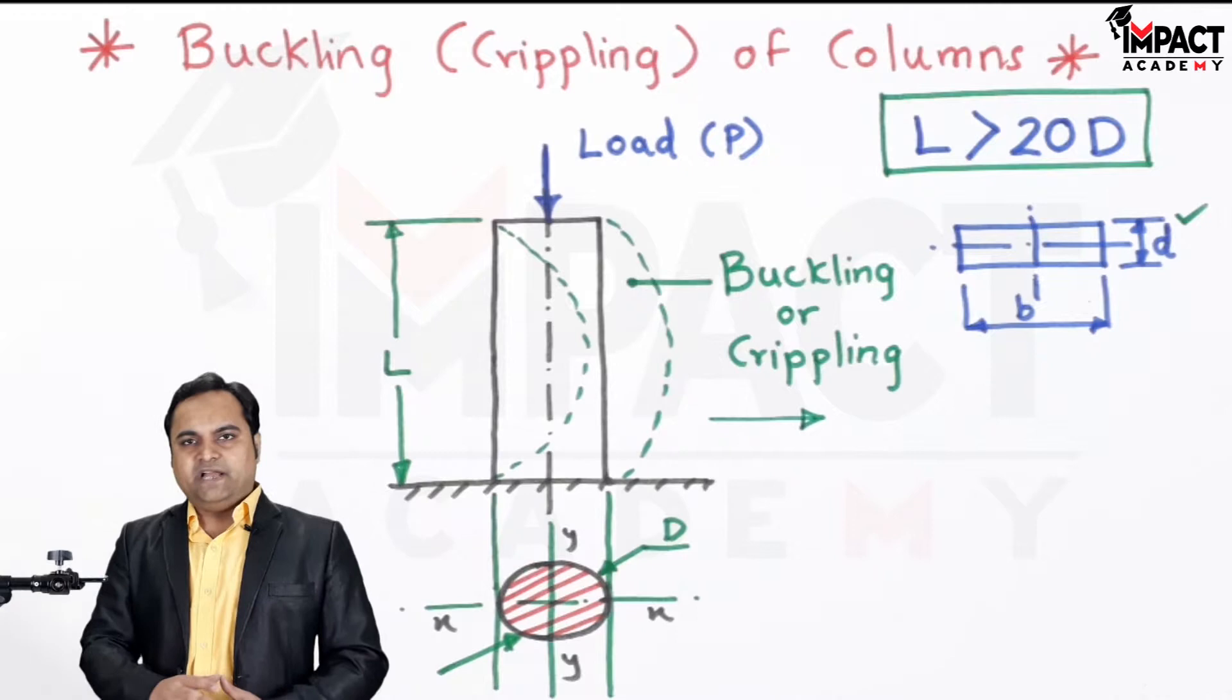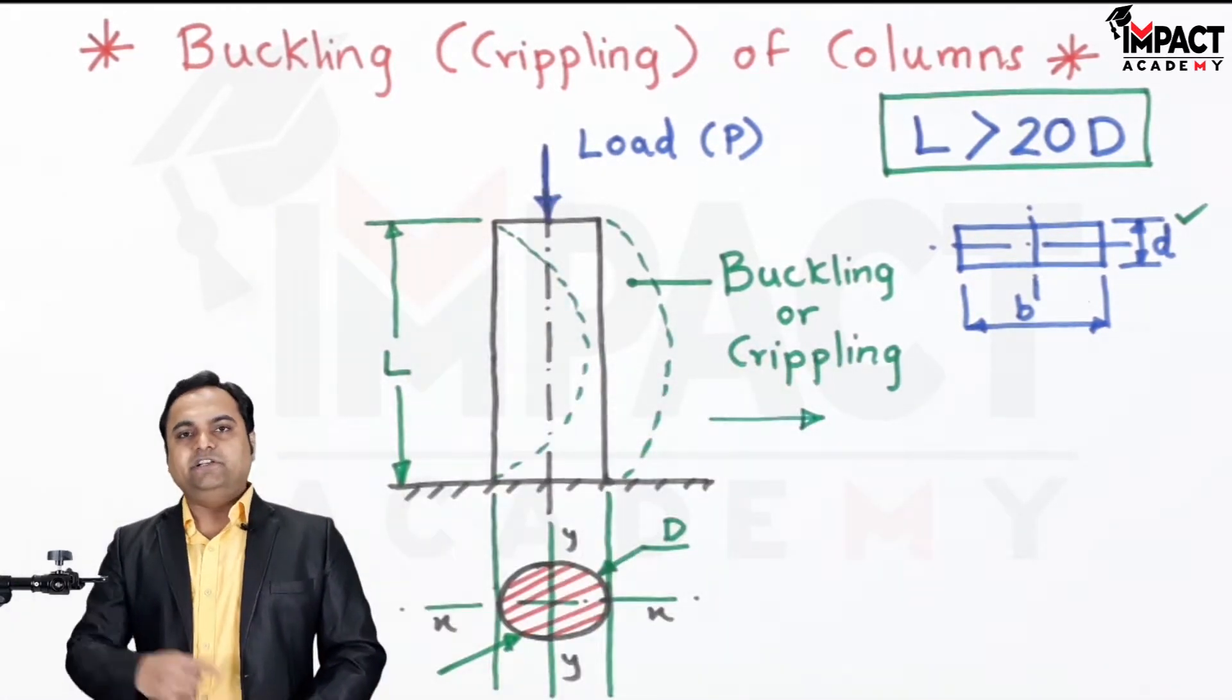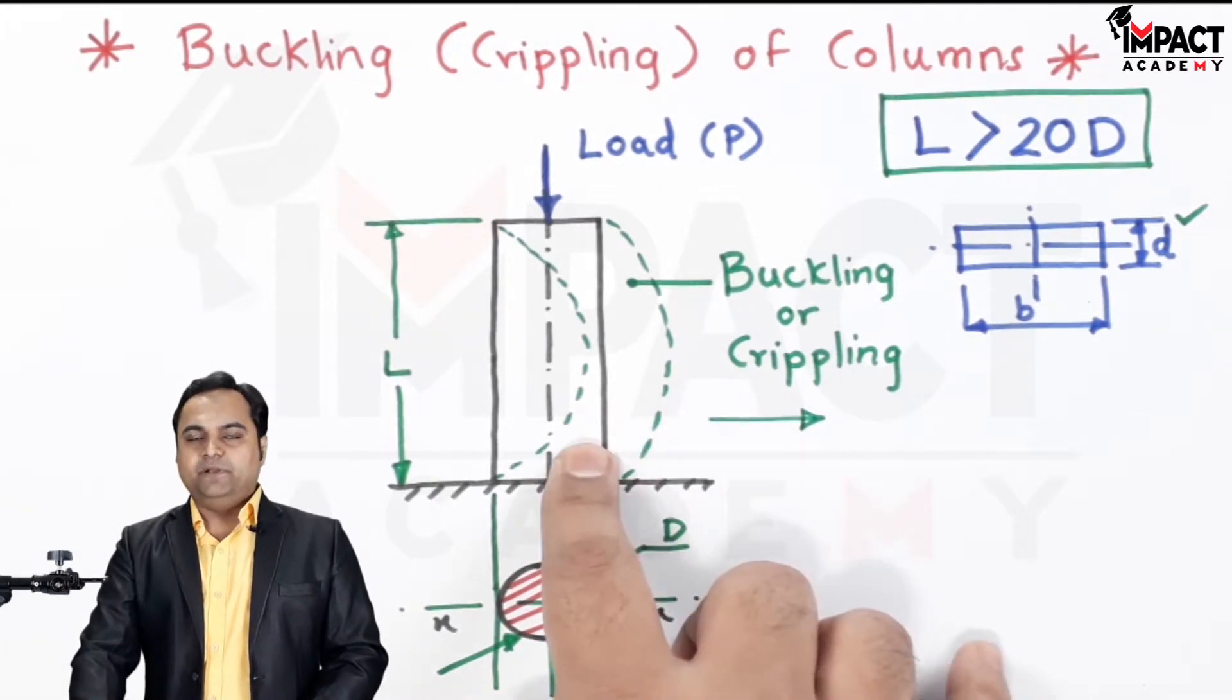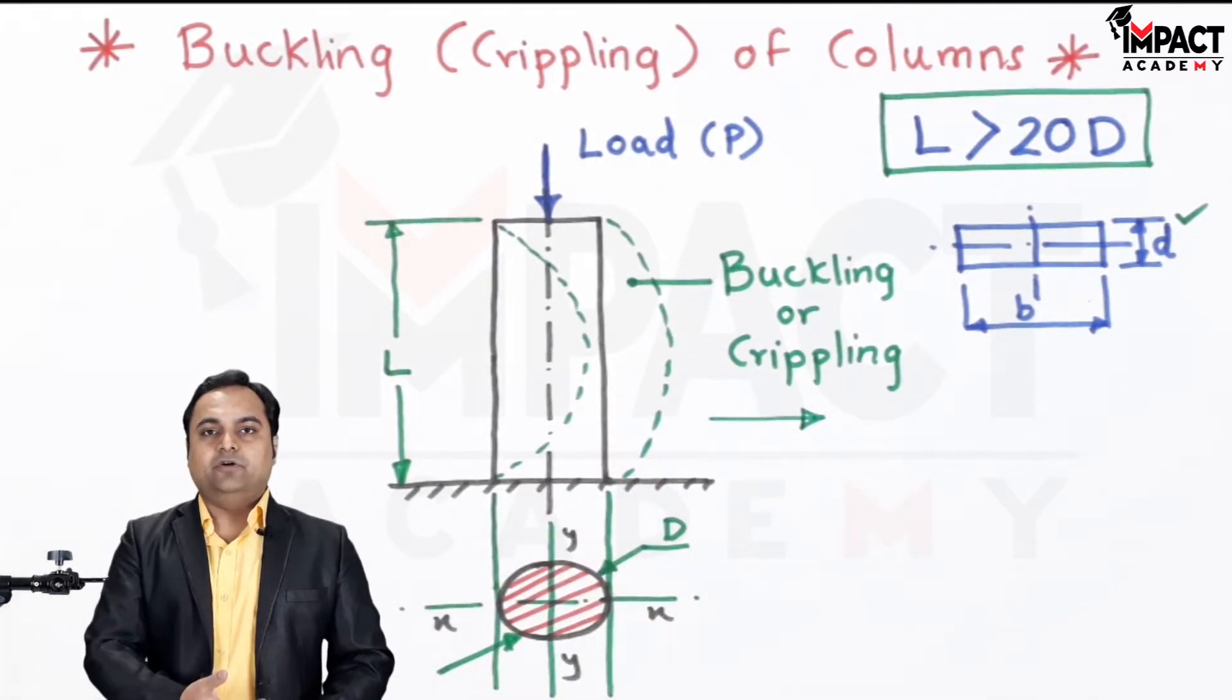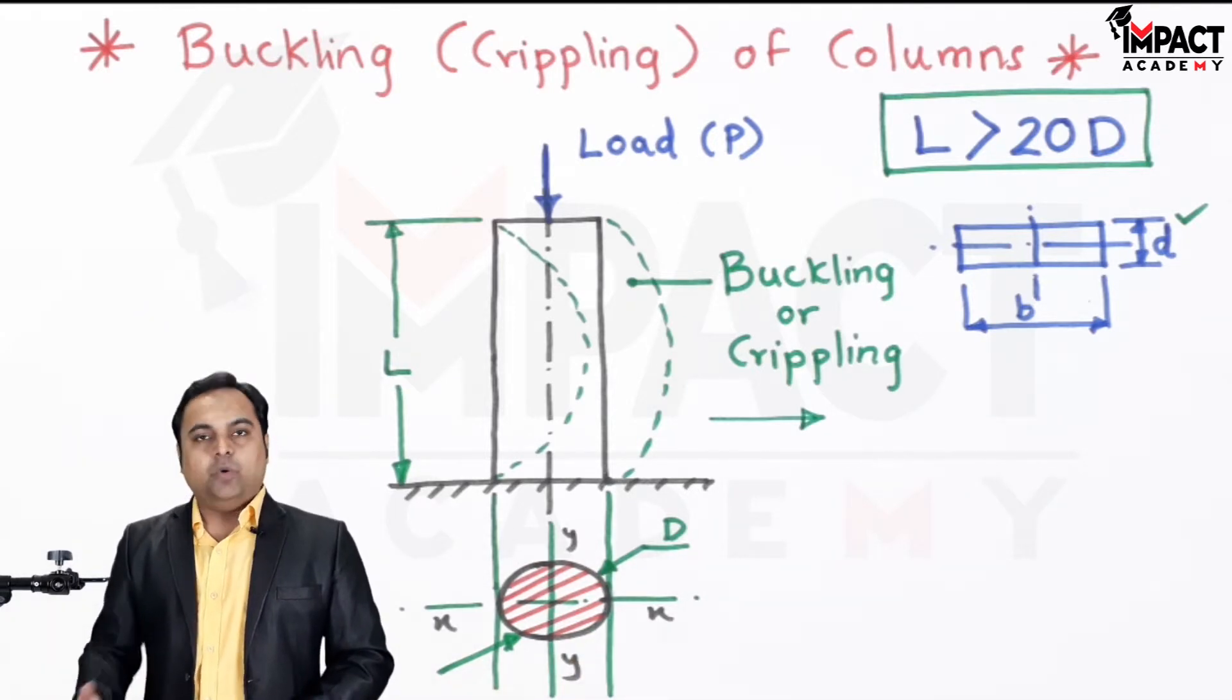So we should ensure that the load which is kept onto the column should not lead to the condition which is like this, like it is buckling or crippling, which is also said as the bending of the column. It should not happen and we need to avoid this condition.